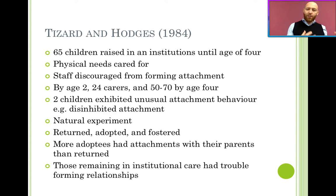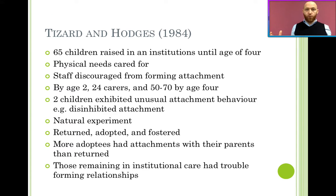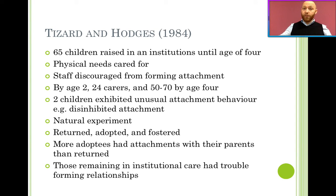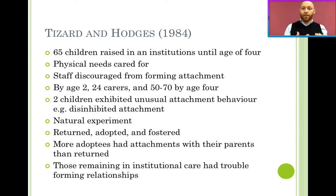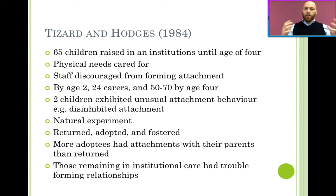By age 2, most of the children had had up to 24 different carers, and by age 4 this had risen to 50 to 70, depending on the child. This means that they never had a single opportunity to form a specific attachment with any of their carers.